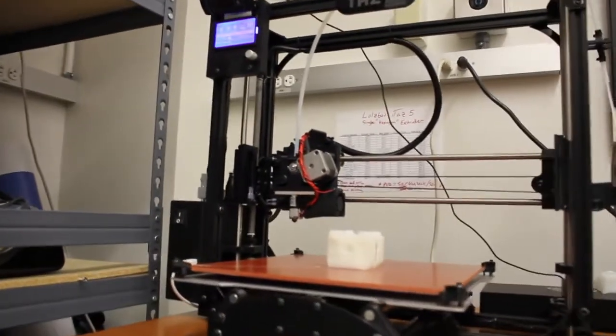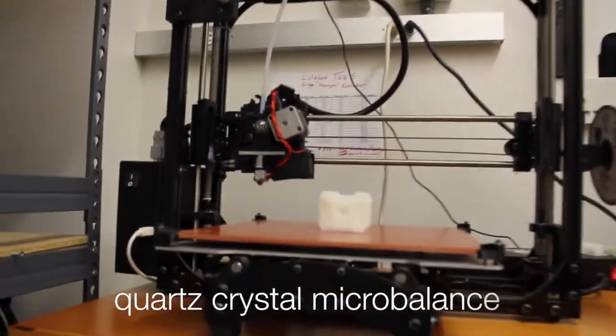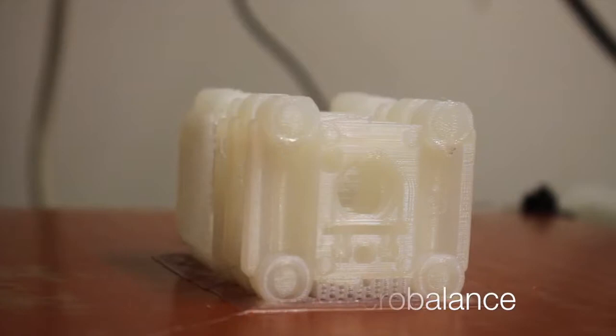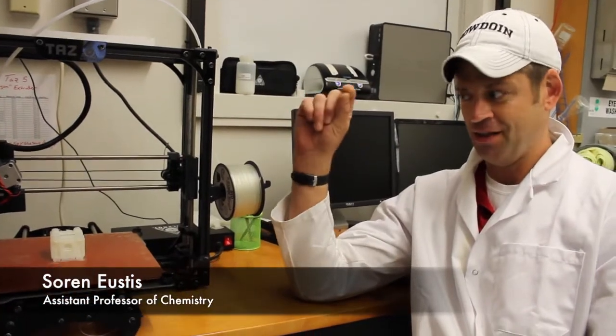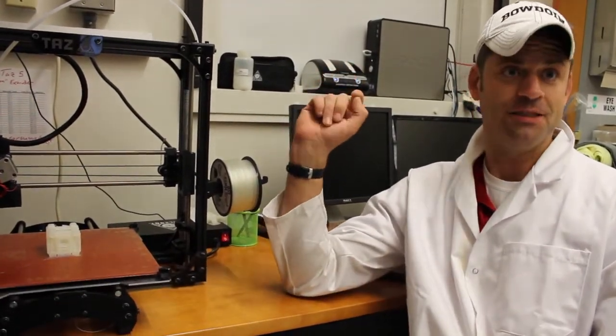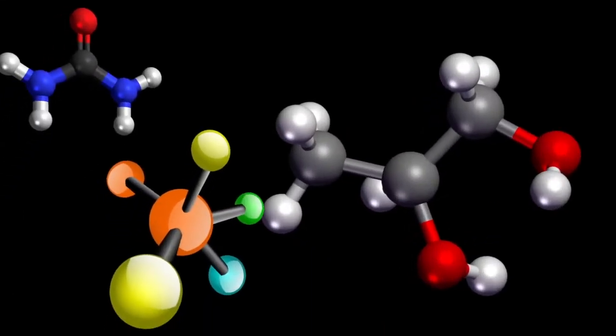So this here is Horch's crystal microbalance. I've just printed this out. But the idea is this is an open source version of a pretty nice piece of scientific equipment which is designed to measure extremely small masses. You could actually measure whether or not a molecule has absorbed onto a surface, for instance.